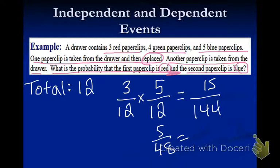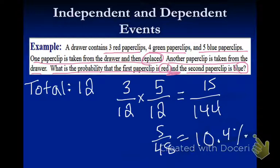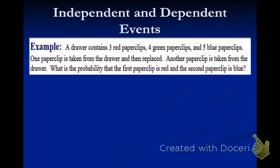I want to turn that into a percent. Five divided by forty-eight times one hundred is ten point four percent. So the probability of picking a red paperclip and then a blue paperclip is ten point four percent. That's an independent event.